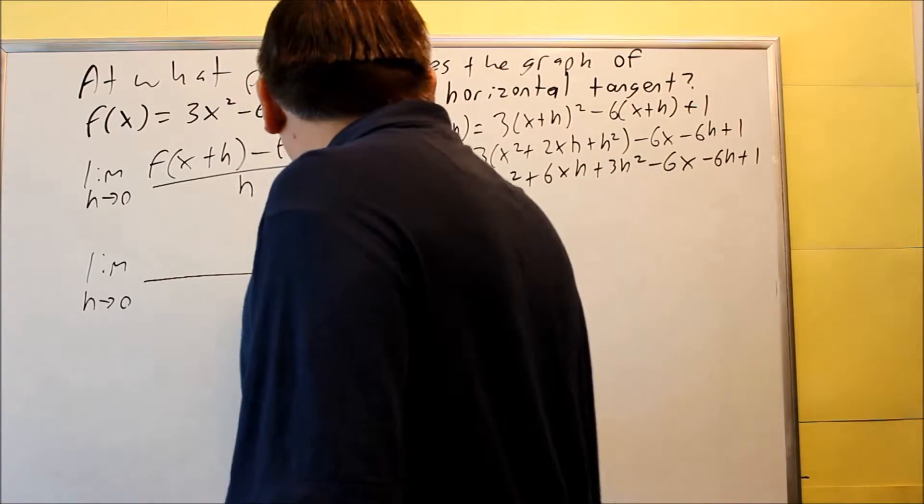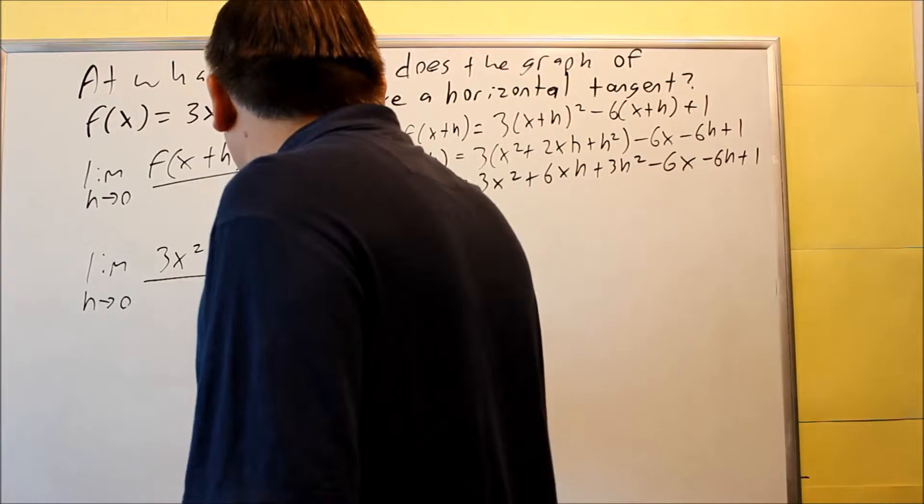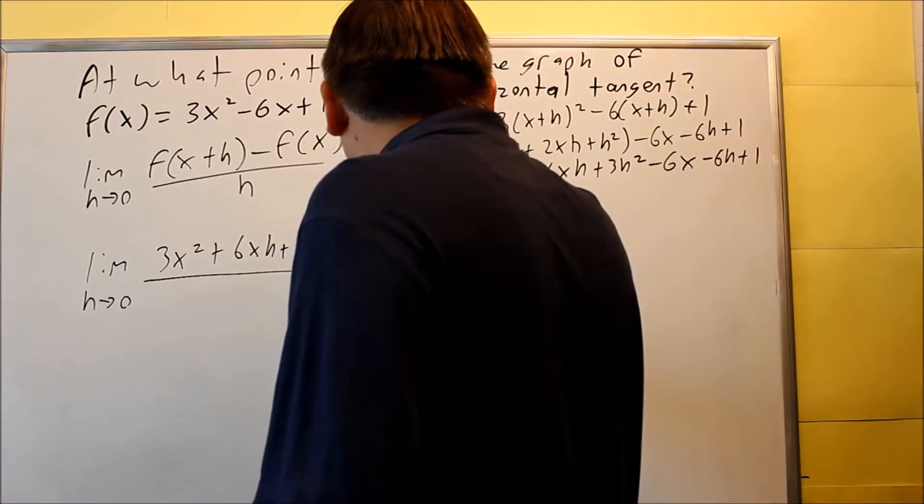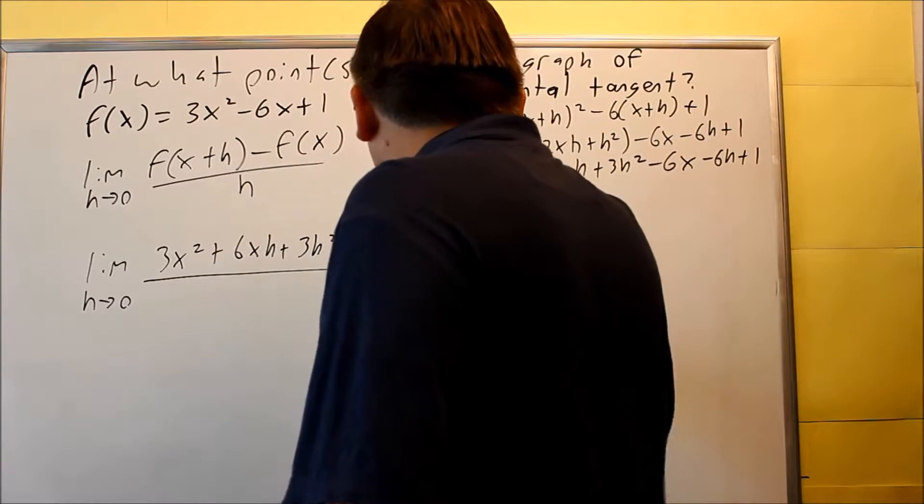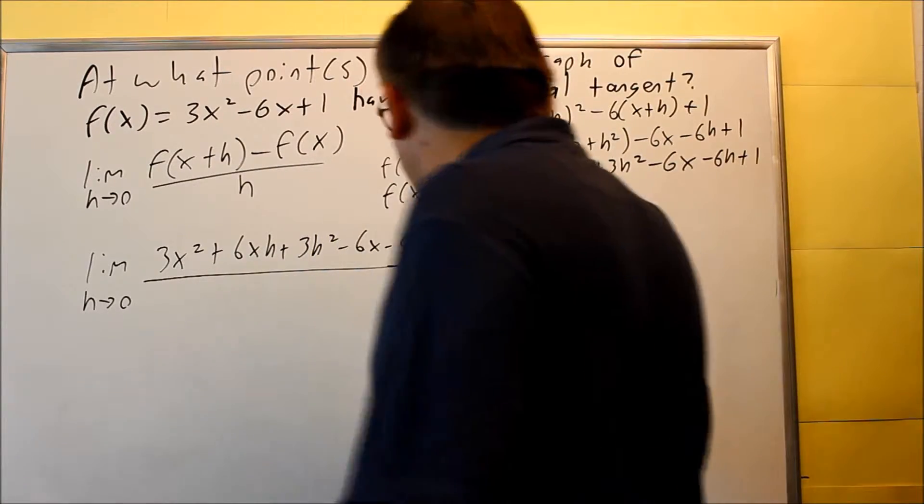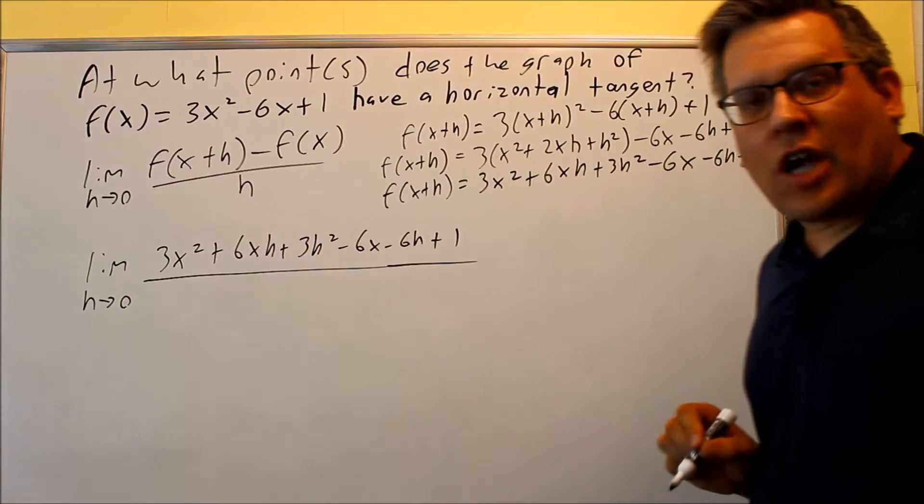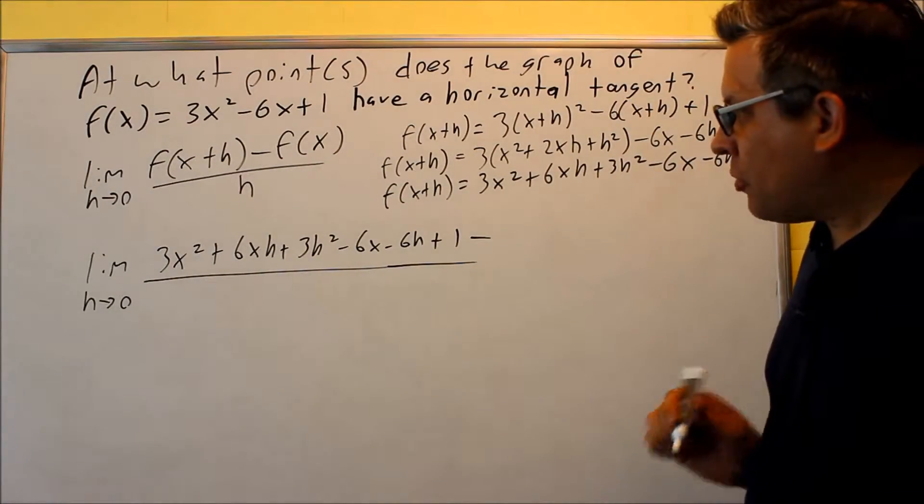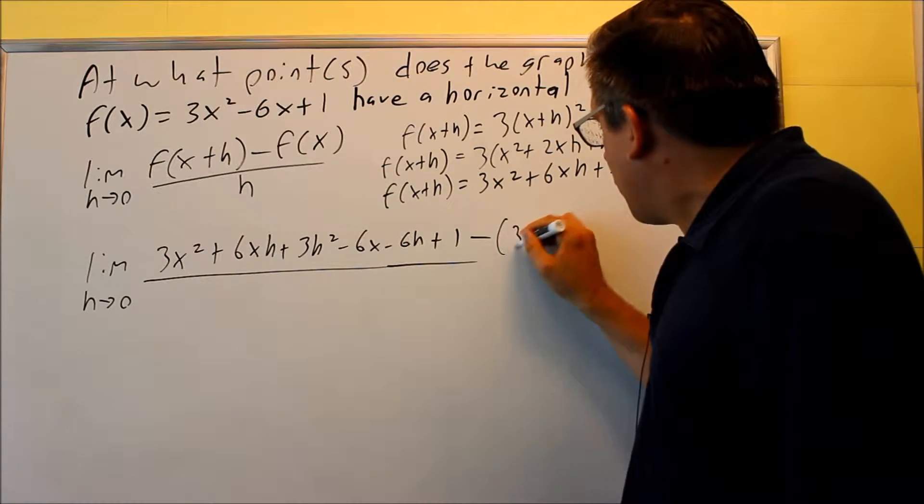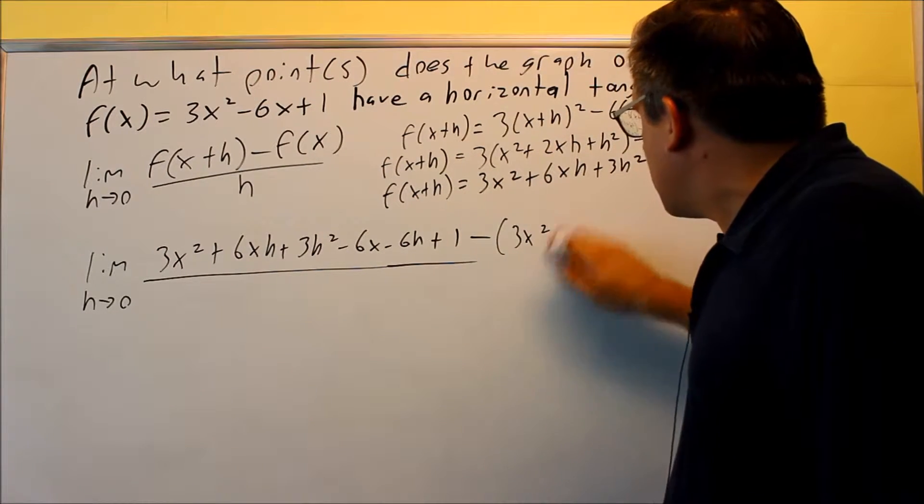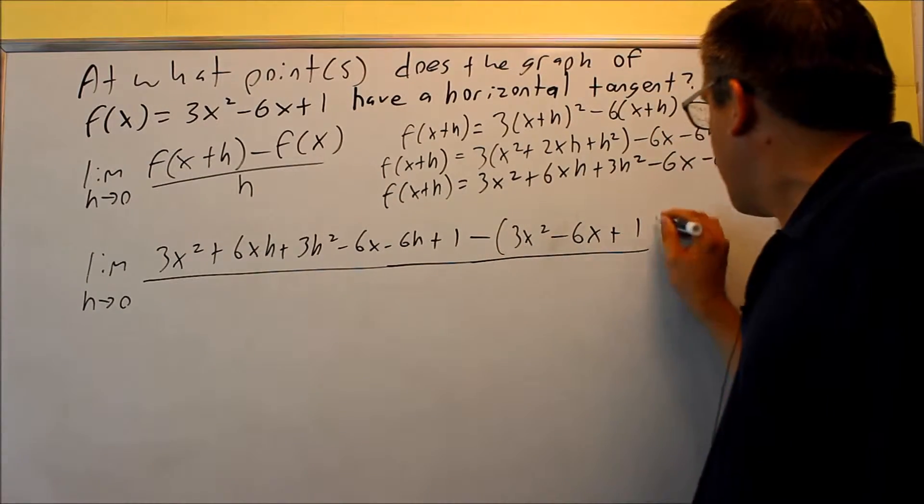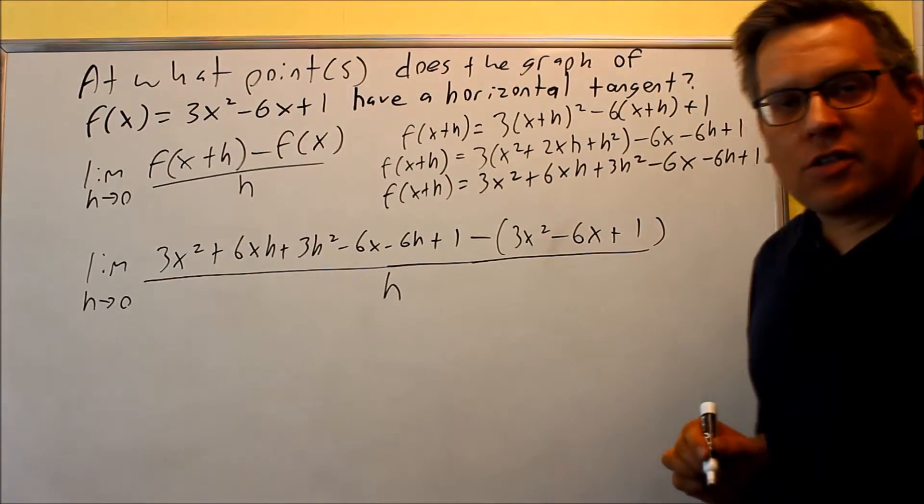Okay, so on top we're going to have 3x² + 6xh + 3h² - 6x - 6h + 1. All that's going to go in there for the first part. That's f(x + h). I'm going to put a minus sign, and now I'm going to put in my function: 3x² - 6x + 1. All this is going to be over h. So this is the part that we want to simplify.